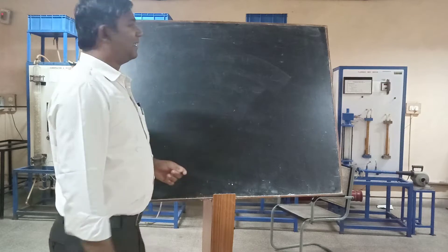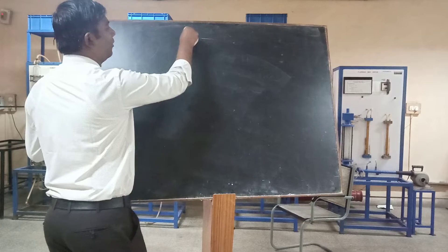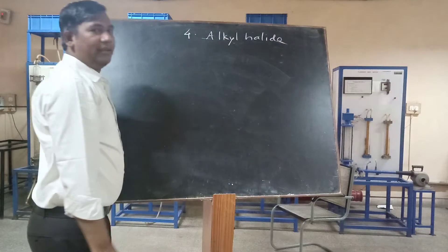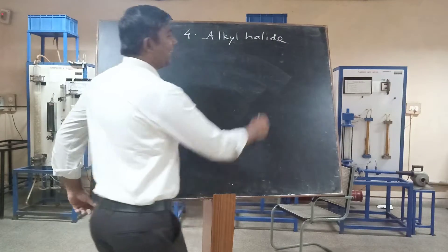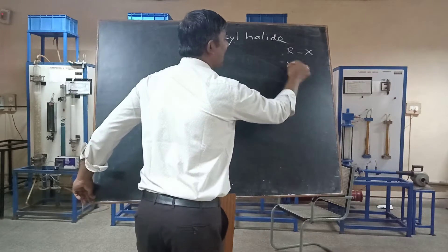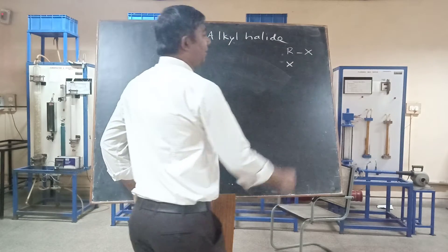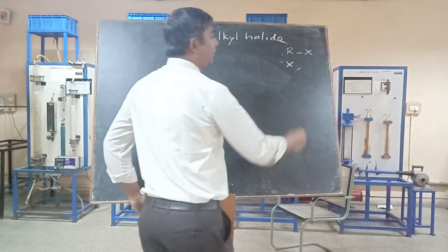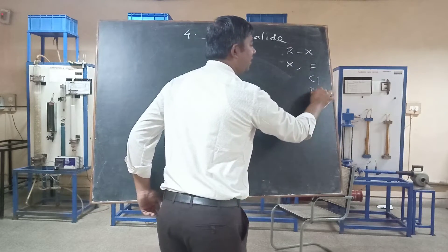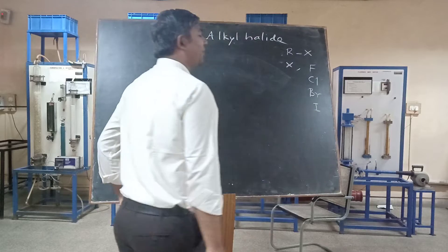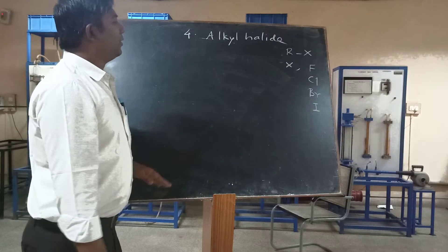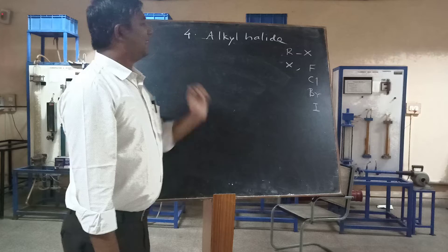Let us discuss the next functional group — the fourth functional group: alkyl halides. Alkyl halides are represented by R–X, where X is a halogen. The halogens commonly known to us are fluorine, chlorine, bromine, and iodine — these are the four halogens we are dealing with.